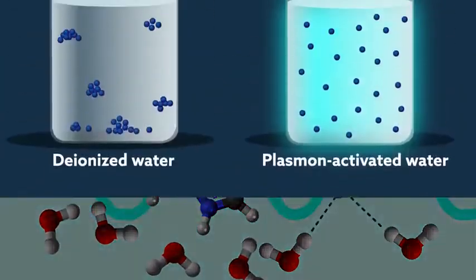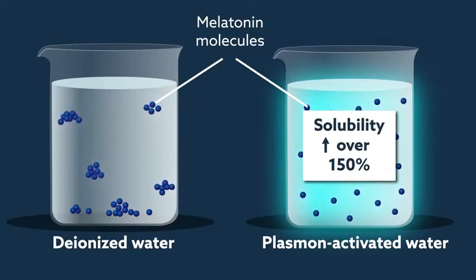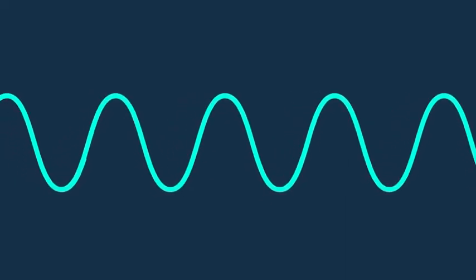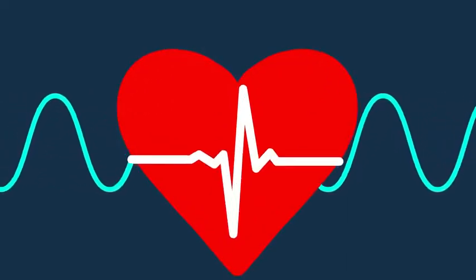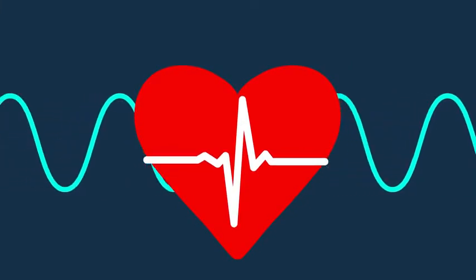In experiments, they found that plasmon-activation of deionized water could increase its solubility by over 150 percent. What's more, not only did melatonin dissolve more easily in plasmon-activated water, it also showed improved health benefits when prepared this way than when dissolved in unaltered deionized water.